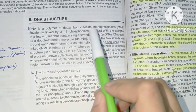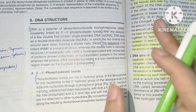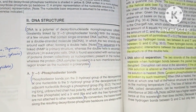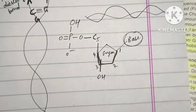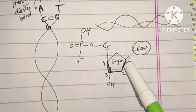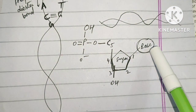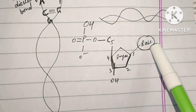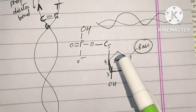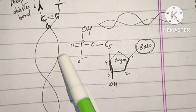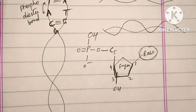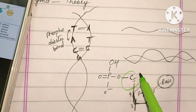Nucleotides are joined by 3'-5' phosphodiester bonds — they are covalently linked. This is the structure of DNA. The sugar molecule is deoxyribose, attached to a nitrogenous base (purine or pyrimidine). The phosphate group is attached at carbon-5, which is the C-5 terminal.